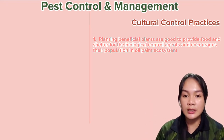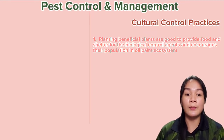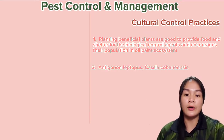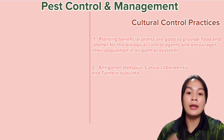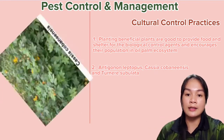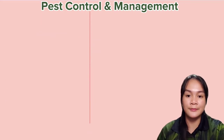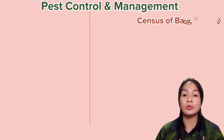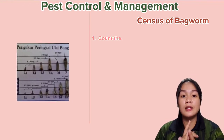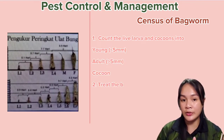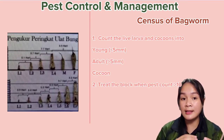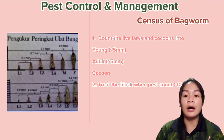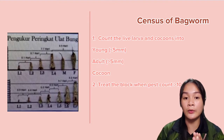For cultural control, planting beneficial plants is good to provide food and shelter for the biological control agents and to encourage their population in the oil palm ecosystem. Many beneficial plants commonly found in oil palm are: Antigonon leptopus, Cassia covenensis, and Turnera subulata. The last method of controlling the oil palm bagworm pest is through census — first, count leaf larvae and cocoons into categories: young larvae (less than 5 mm), old larvae (more than 5 mm), and cocoons. Treat the block when the pest count is more than 10.